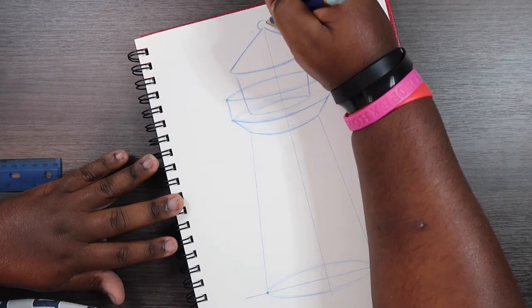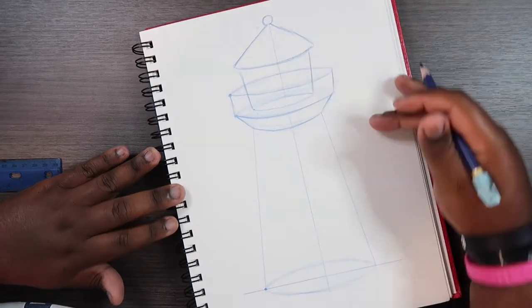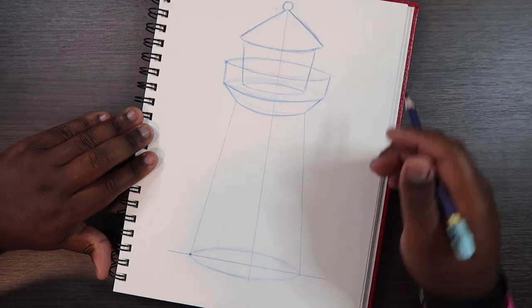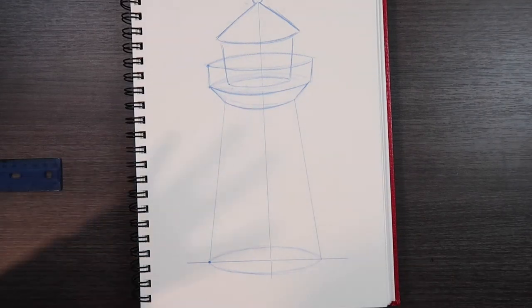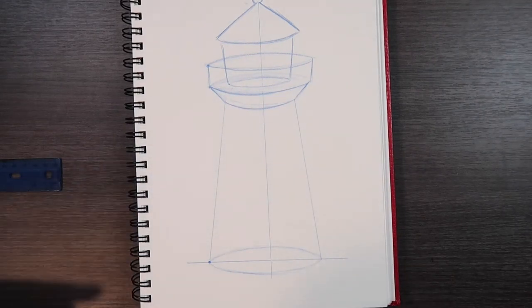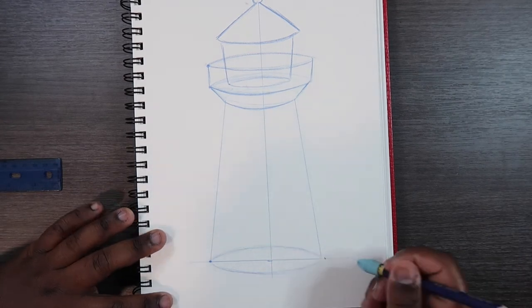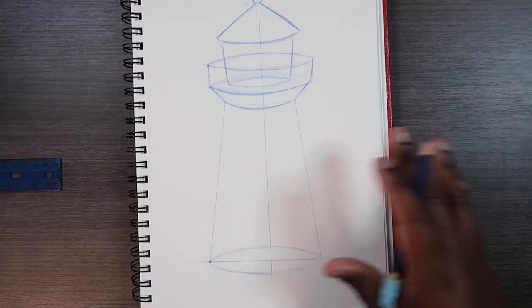And then I'm going to just draw a little dot up here. Okay, so now the symmetry part of this lighthouse tutorial is done. So really we can get rid of this baseline because we won't need it anymore. And we can pretty much freelance the rest of the drawing.